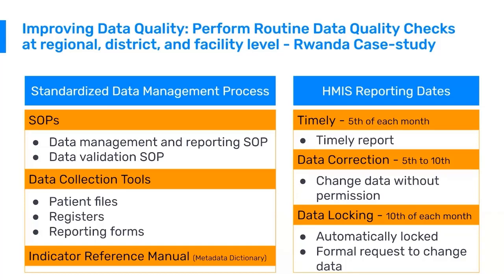Their HMIS requires facility-level reporting by the fifth of each month — that's what is defined as a timely report. Data correction is allowed between the fifth and the tenth of the month, so users at facility and district level can change data without having to ask permission. They are doing their own data quality desk reviews, maybe doing some validation or verification of the data, and if they're finding any issues they are correcting them between the fifth and the tenth.